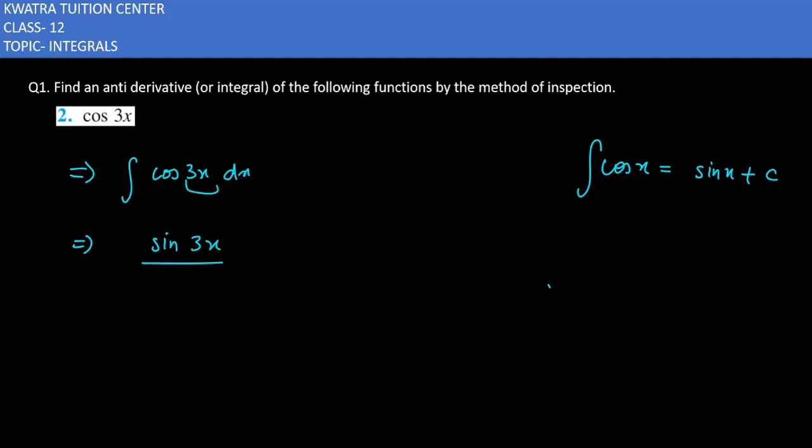And 3x ka coefficient, x ka coefficient kya hai? 3 hai. So it will come in division by 3 plus a constant. So this is your integral or anti-derivative of cos 3x. Now moving to the third one.